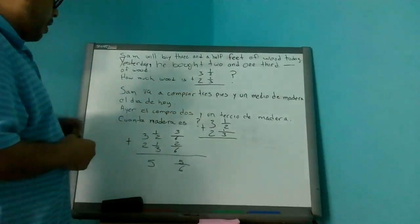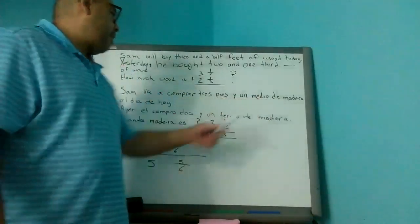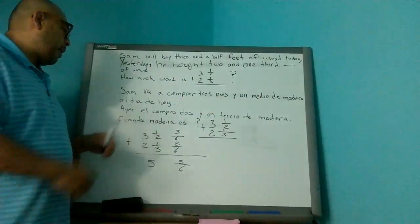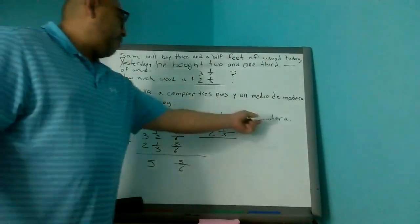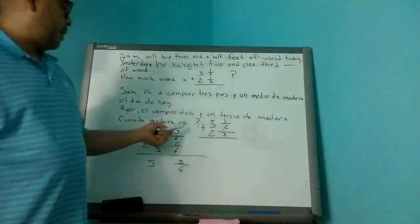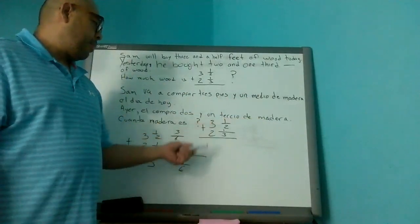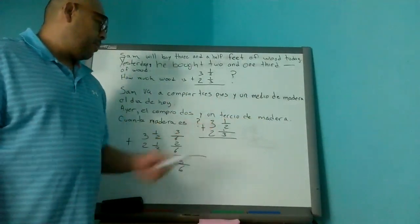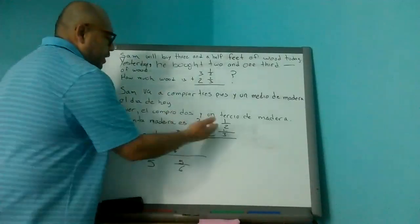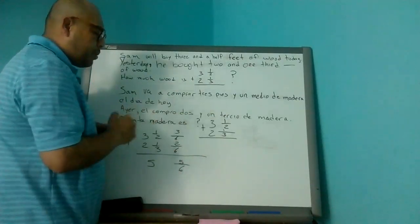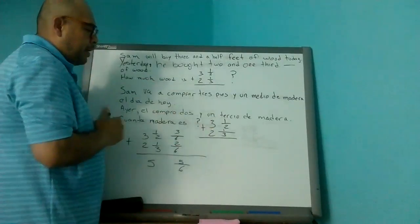Vamos a en español. Sam va a comprar tres pies en medio de madera el día de hoy. Ayer, él compró dos y un tercio de madera. ¿Cuánta madera es? Tres enteros y un medio y dos enteros y un tercio. O tres pies, un medio, mejor dicho, más dos pies, un tercio.